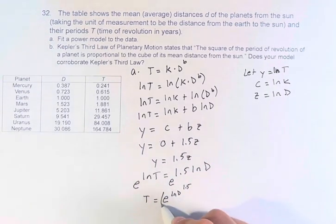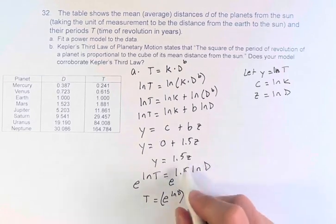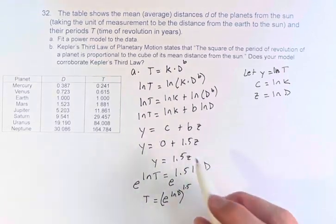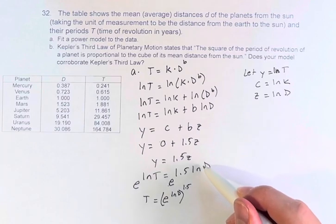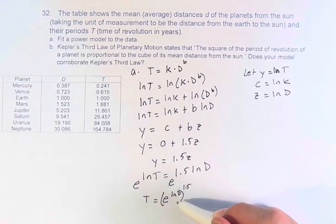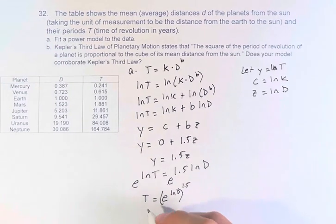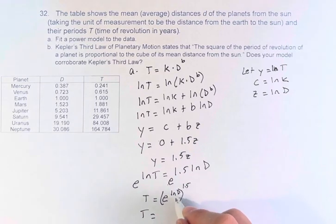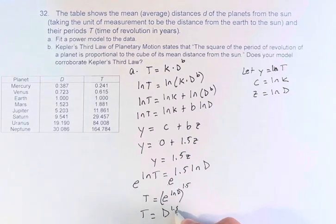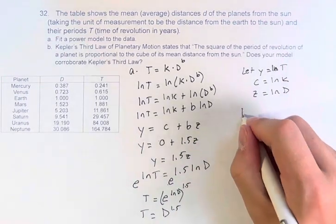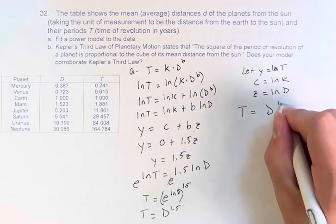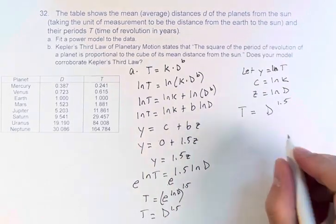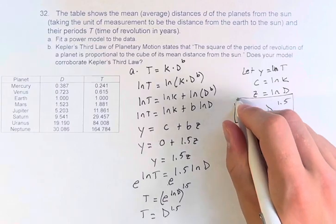If you have two things being multiplied in your exponent, you can do the base to one of them. So e to the ln d to the other, to the 1.5. e to the log base e of d is just d to the 1.5. So therefore, our model is t equals d to the 1.5. This is the power function that models this data.